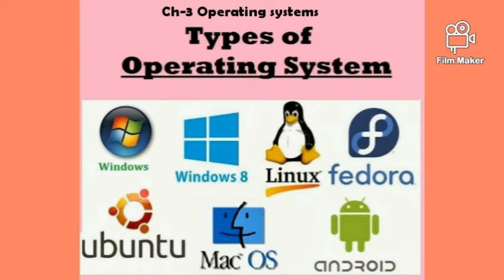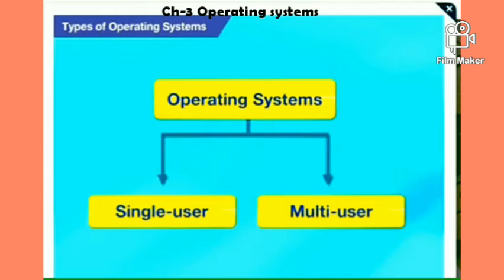Hello class. Today's topic is types of operating system, but before starting, let me tell you about graphical user interface. The short form is GUI. This allows the user to click on option buttons, menus, icons, toolbars, or other controls to accomplish any task. It provides a graphical-oriented way to interact with the system. For example, all versions of Windows are GUI-based.